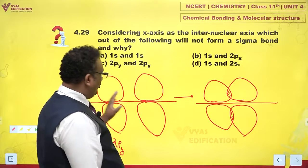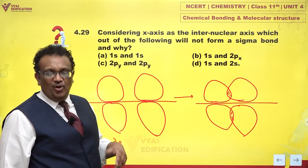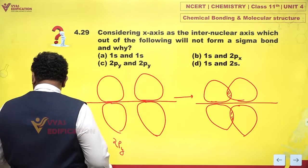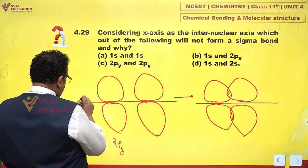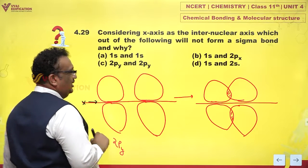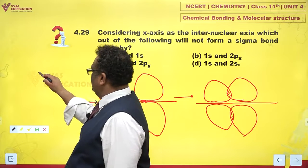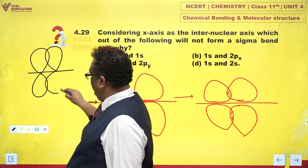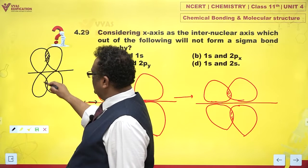You might feel that I have drawn p orbitals differently. Normally, people don't draw them like this. But these are more accurate. Otherwise, the way people draw it is this. They just draw flat orbitals, py and py like this. You can draw this also. This is perfectly fine.